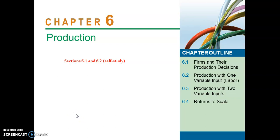Good day ECO231 students. It is week 6 and in this week you will work through chapter 6. It is very important that you take note that sections 6.1 and 6.2 are strictly for self-study. I will be skipping these two sections — the firms and their production decisions, and production with one variable input — as these two aspects of the theory of the firm were taught in ECO151 last year. I will continue with sections 6.3 and 6.4.